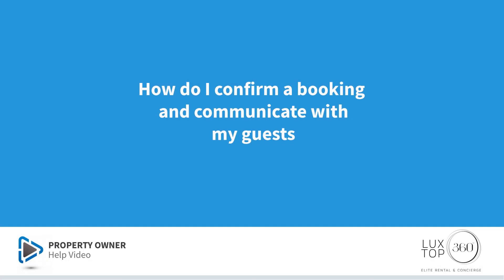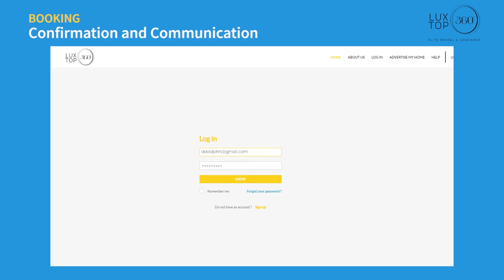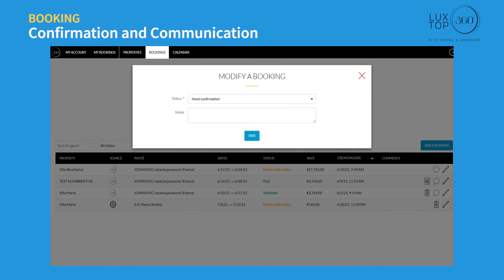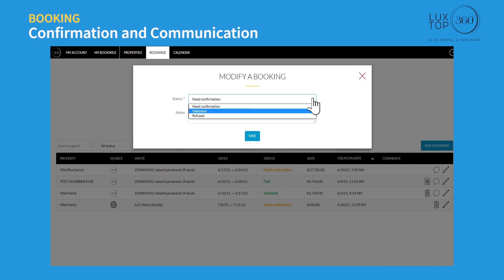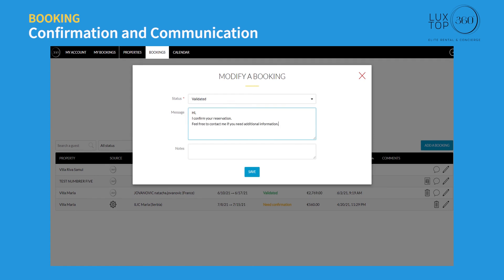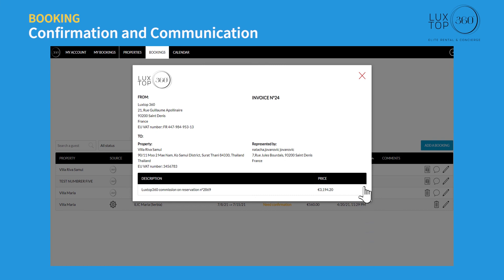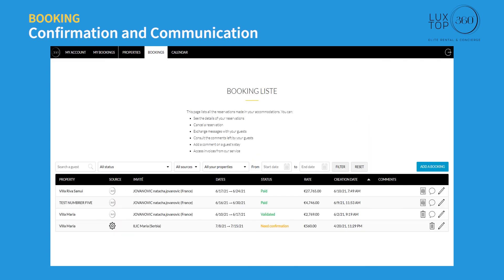How do I confirm a booking and communicate with my guest? Log in and click on 'Bookings.' You can see bookings that are validated and others waiting for confirmation. Click the modify icon, then select 'Validated' to accept a booking. You can write a message to your guest about the booking confirmation and click save. The booking will show as successfully activated with the status changed to paid, and an invoice is automatically generated by luxtop360.